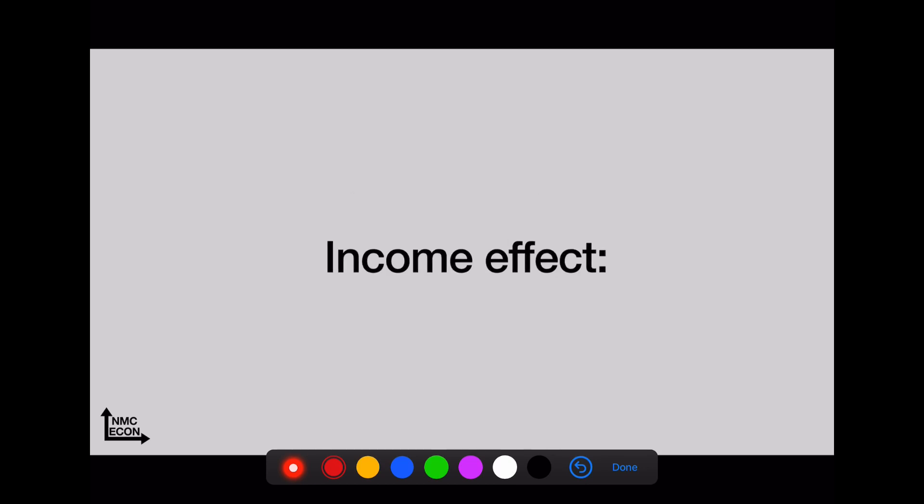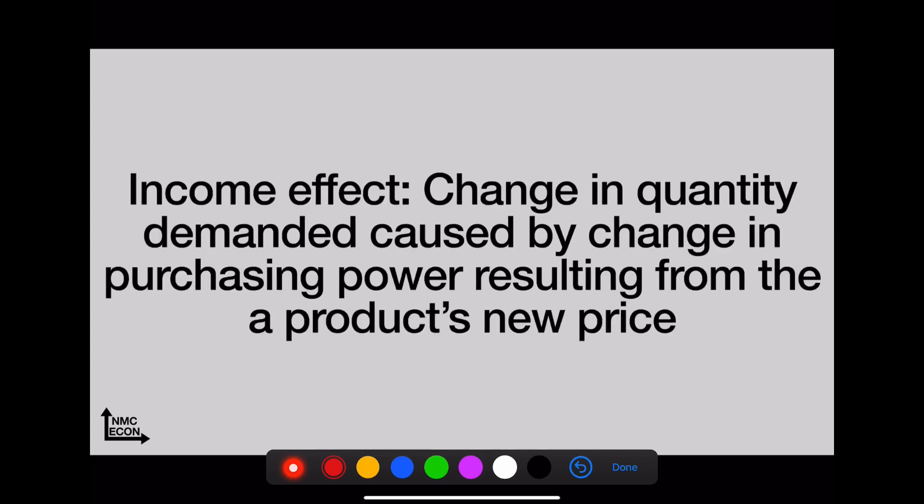The income effect—this is a change in quantity demanded caused by a change in the purchasing power. That's the ability to buy something with money, resulting from a product's new, probably lower price. When things get cheaper we can buy more of them. Again, this is not more demand, it's more quantity demanded.